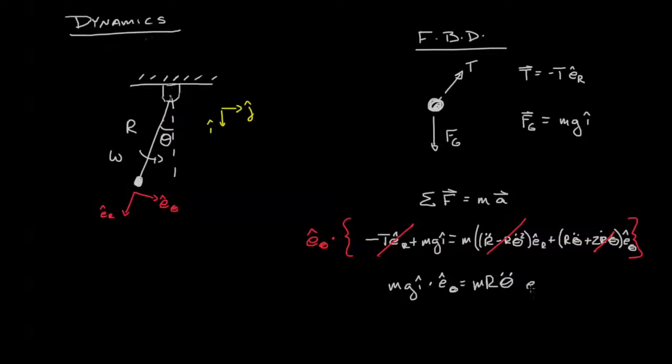So by looking at the terms we have set up right here, we know that i dot e_theta is simply going to be negative sine theta. And on our right, we have m r theta double dot. This is our equation of motion for a pendulum.